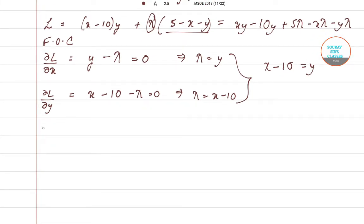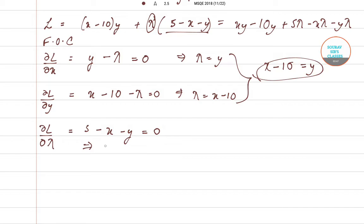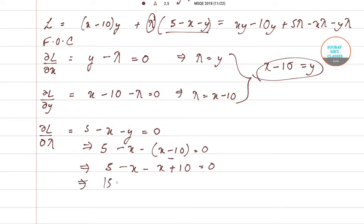Next, partially differentiating L with respect to lambda gives 5 minus x minus y = 0. Substituting y = x minus 10 into this equation: 5 minus x minus (x minus 10) = 0, which simplifies to 15 minus 2x = 0, giving x = 7.5.